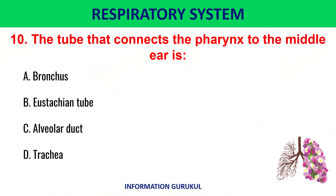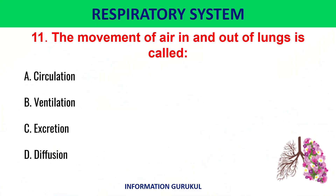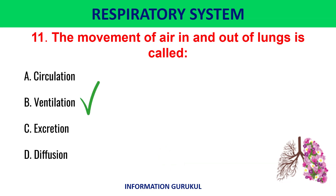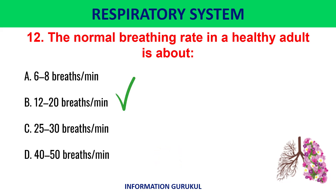The tube that connects the pharynx to the middle ear is the Eustachian tube. The movement of air in and out of the lungs is called ventilation. The normal breathing rate in a healthy adult is about 12 to 20 breaths per minute.